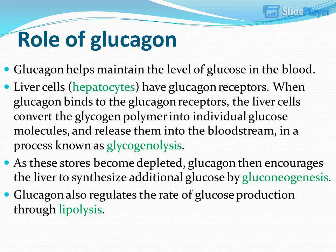Role of glucagon: Glucagon helps maintain the level of glucose in the blood. Liver cells (hepatocytes) have glycogen receptors. When glucagon binds to these receptors, the liver cells convert the glycogen polymer into individual glucose molecules and release them into the bloodstream, in a process known as glycogenolysis. As these stores become depleted, glucagon encourages the liver to synthesize additional glucose by gluconeogenesis. Glucagon also regulates the rate of glucose production through lipolysis.